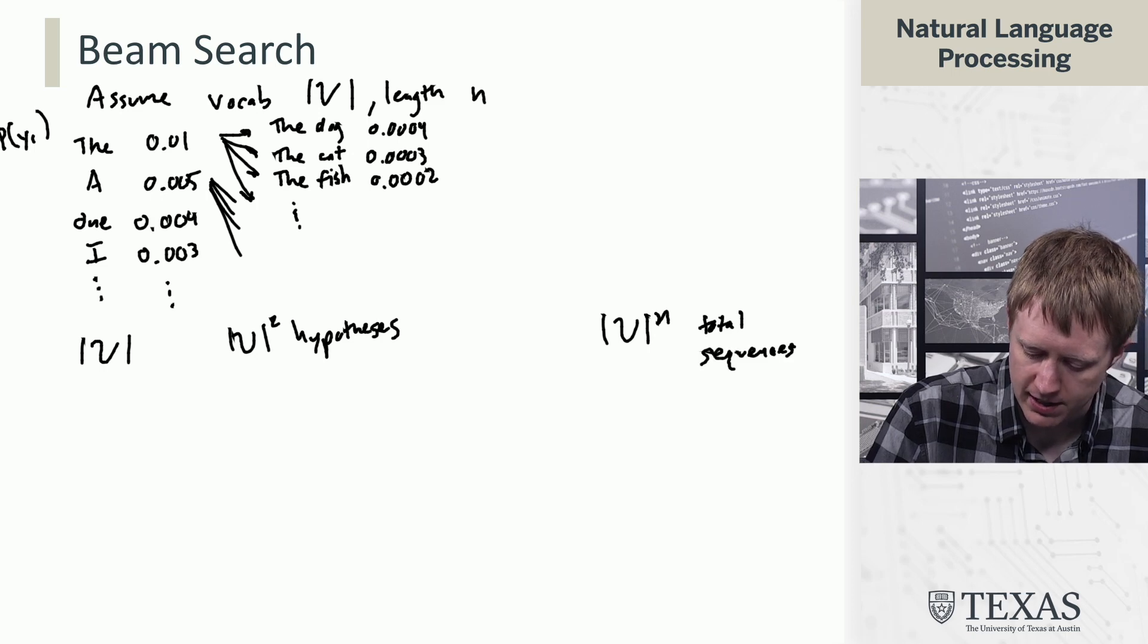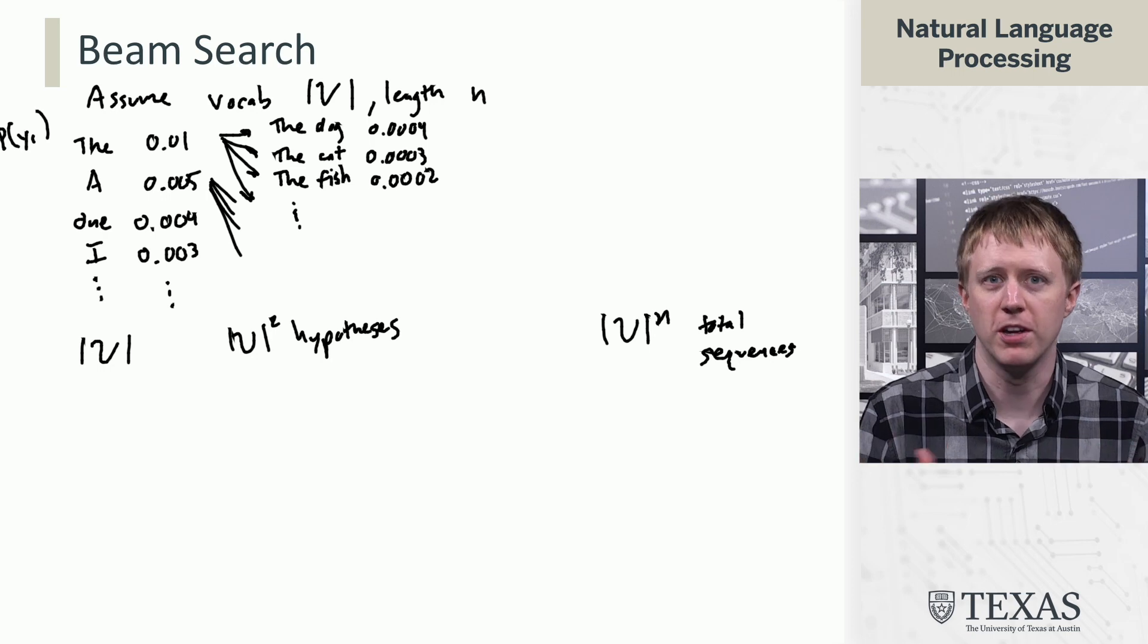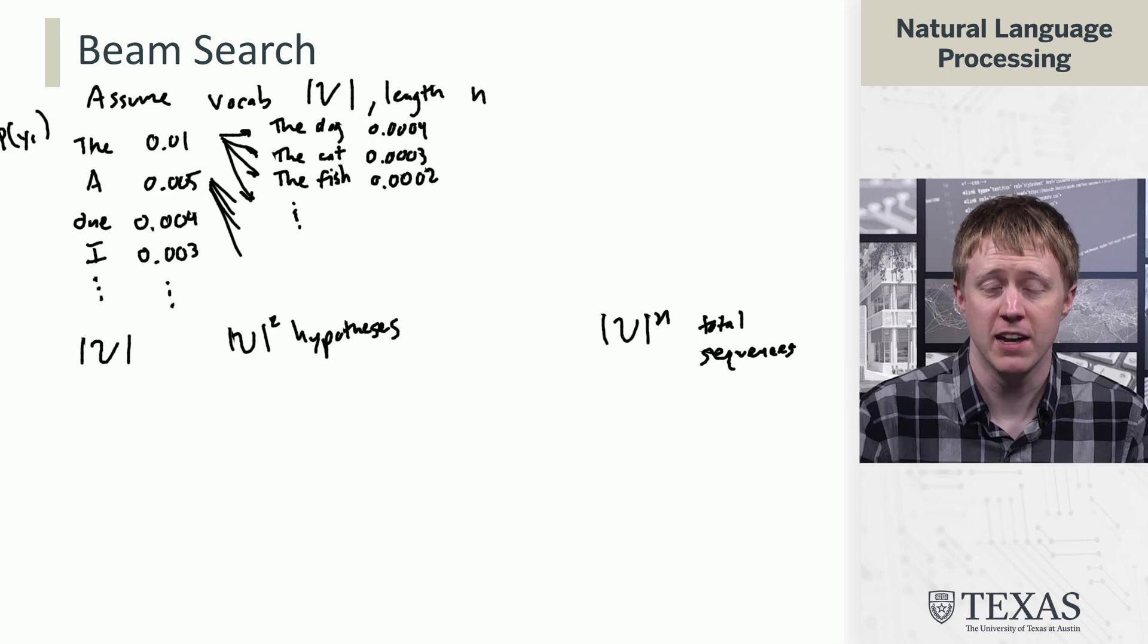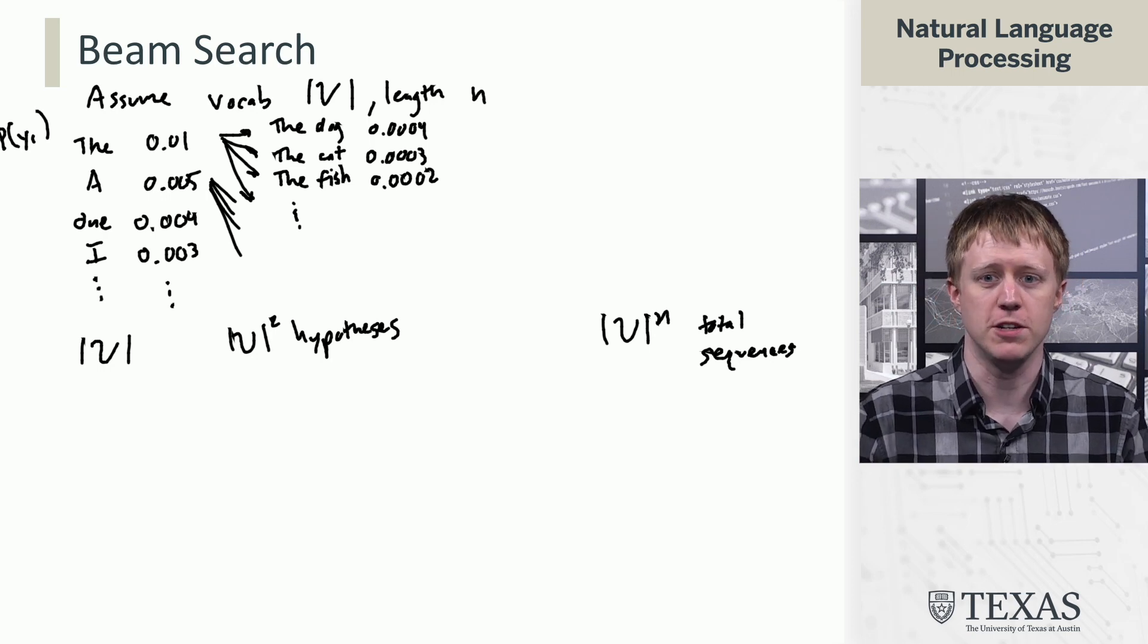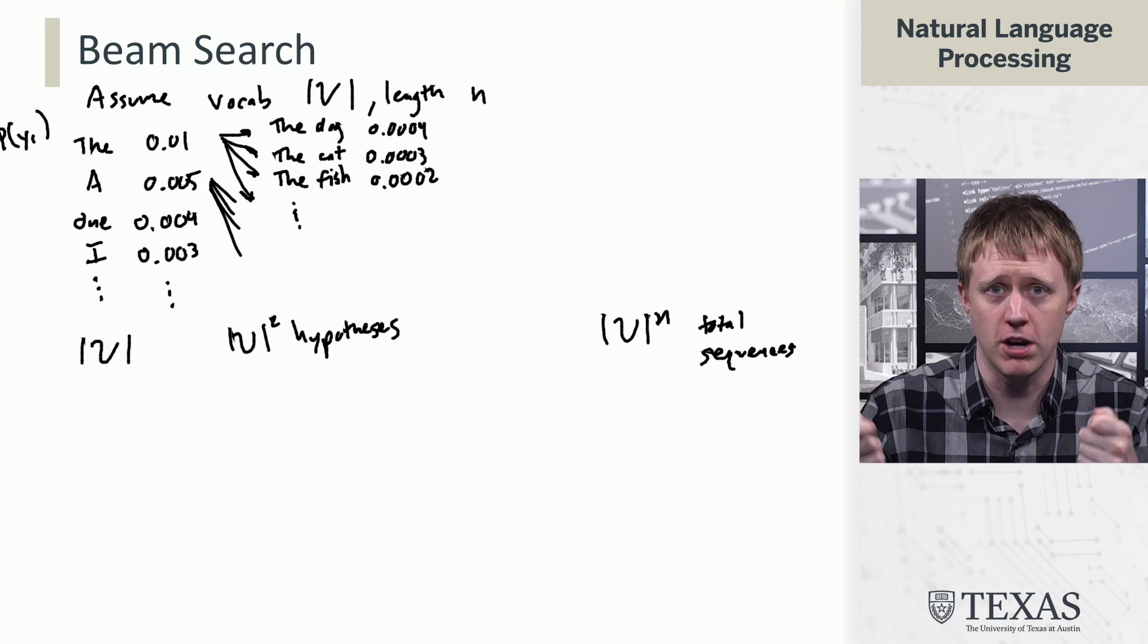I think we're kind of familiar with exponentials being bad. The fact that this is exponential in n and you might want to generate something potentially very long is a problem.